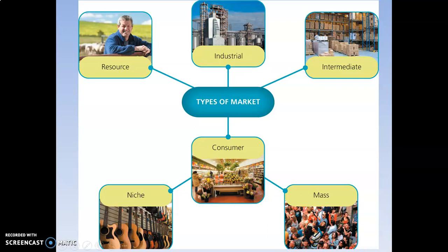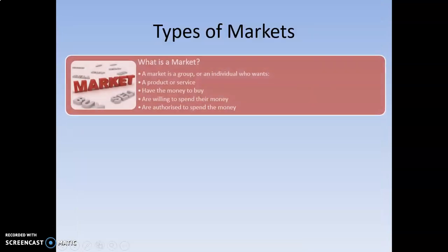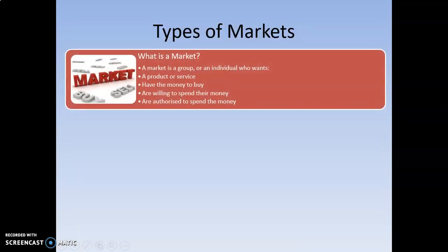Copy down these notes and pause the video when you need to. A market is a group or an individual who wants a product or service, has the money to buy it, is willing to spend the money, and is authorised. You may recall we talked about the concept of the MAN — the person with the Money, the Authority and the Need.